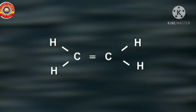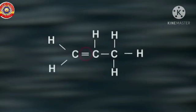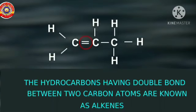Notice the double bond in this compound. Now see another hydrocarbon with three carbon atoms. When one hydrogen atom each is removed from any two adjacent carbon atoms, a double bond forms between those carbon atoms. Hydrocarbons having a double bond between carbon atoms are called alkenes - the second category of hydrocarbon.